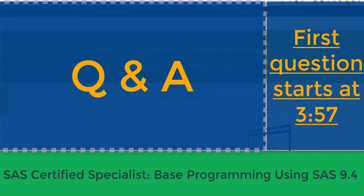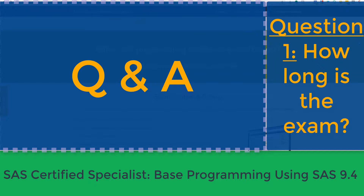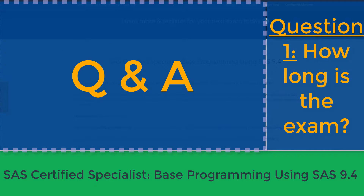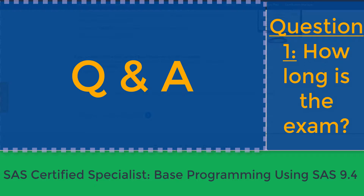One of the questions I get is how long the exam is. The exam takes about 135 minutes to complete — a bit over two hours. The new exam is called SAS Certified Specialist: Base Programming Using SAS 9.4, and it came out fairly recently. For those who have completed the old exam called SAS Certified Base Programmer for SAS 9, you can take a shorter upgrade exam.